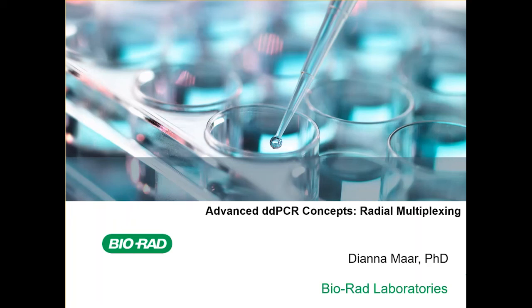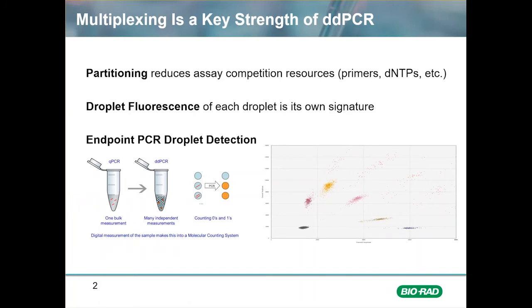Welcome to Bio-Rad's master class series. This short video describes the radial multiplexing strategy, which is one of three easy multiplexing strategies used to expand the number of assays that can be added to a well when using ddPCR. Droplet digital PCR has many compelling advantages over other PCR methods, and easy multiplexing is one of these compelling features.